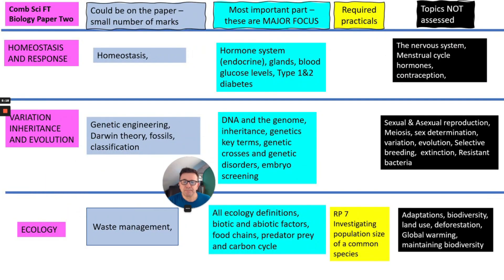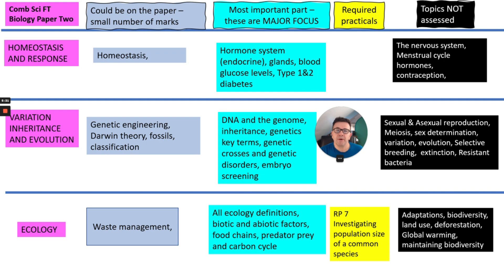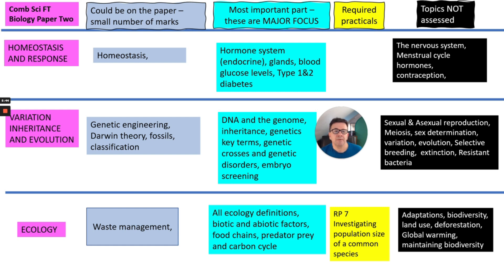Now Paper 2 — they've taken a lot more out of Paper 2. For Homeostasis and Response, there's nothing on the nervous system, nothing on the menstrual cycle, FSH, LH, or contraception. What it is about is glands — maybe labelling the glands — knowing about blood glucose levels, understanding how diabetes occurs, what the major symptoms are, and how to treat diabetes, for example injection of insulin.